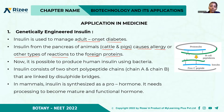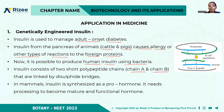Now it is possible to produce human insulin using bacteria. If you take the structure of insulin, it consists of two short polypeptide chains — the A chain and the B chain — and they are linked by disulfide bridges.